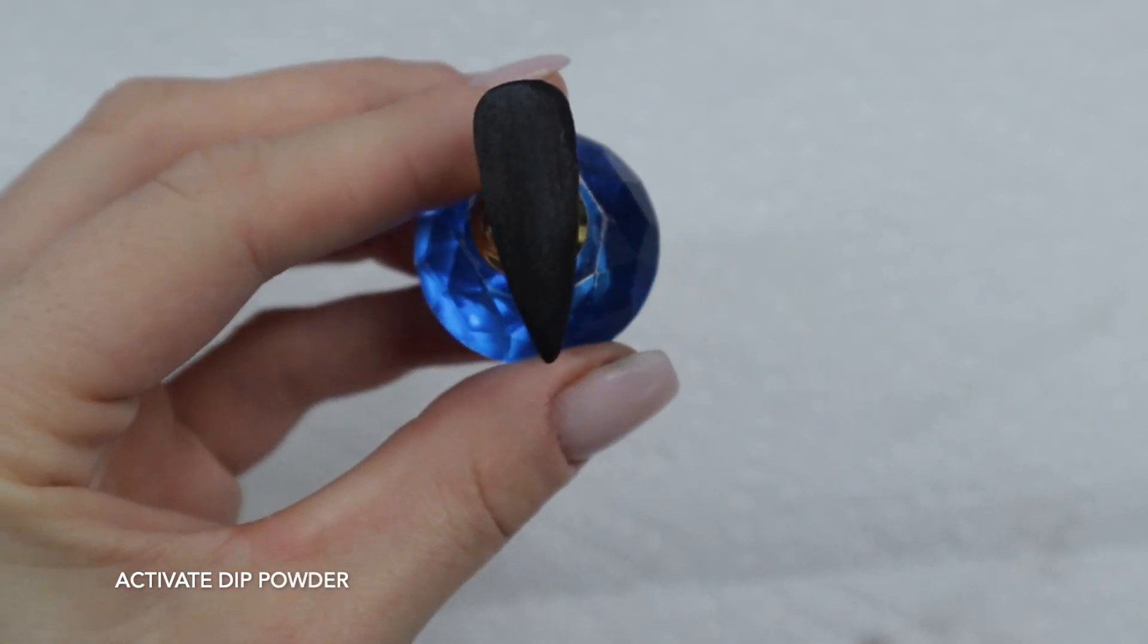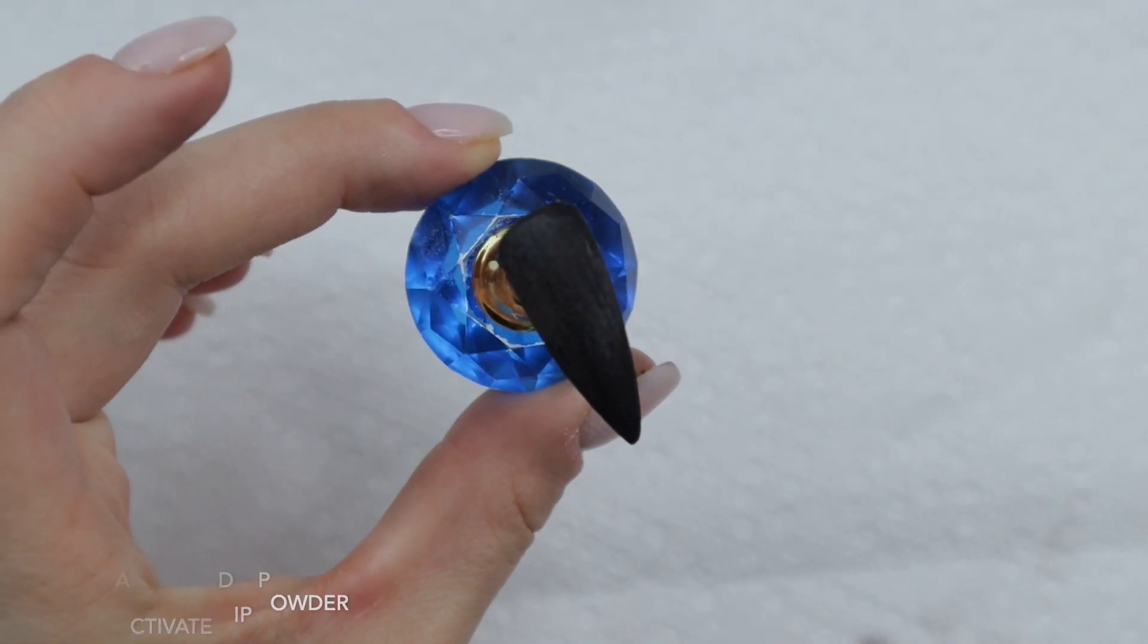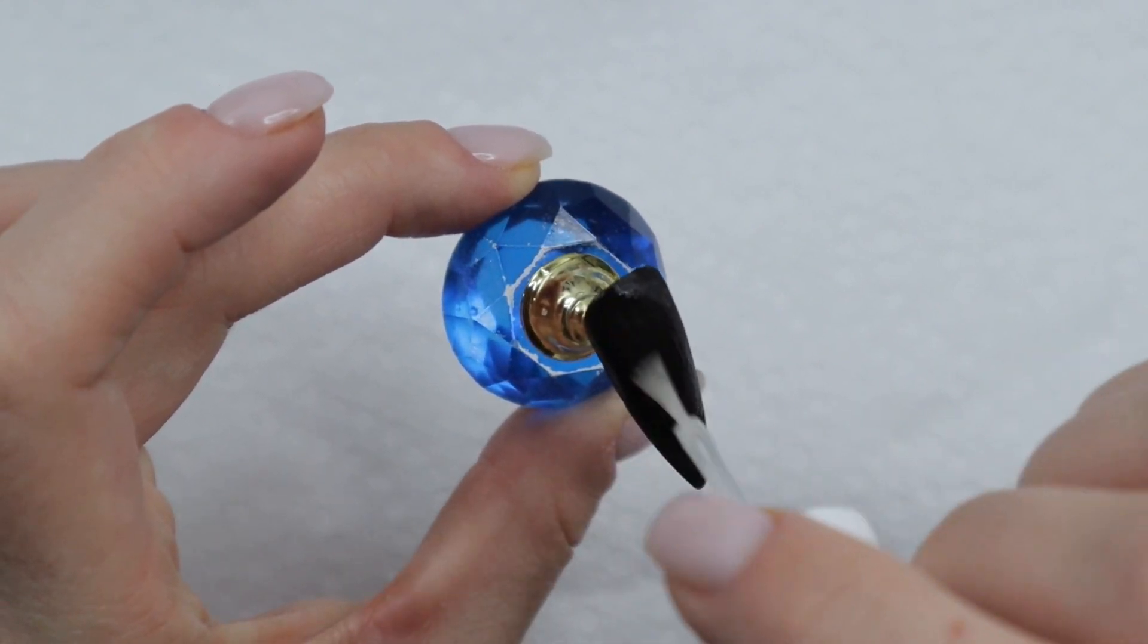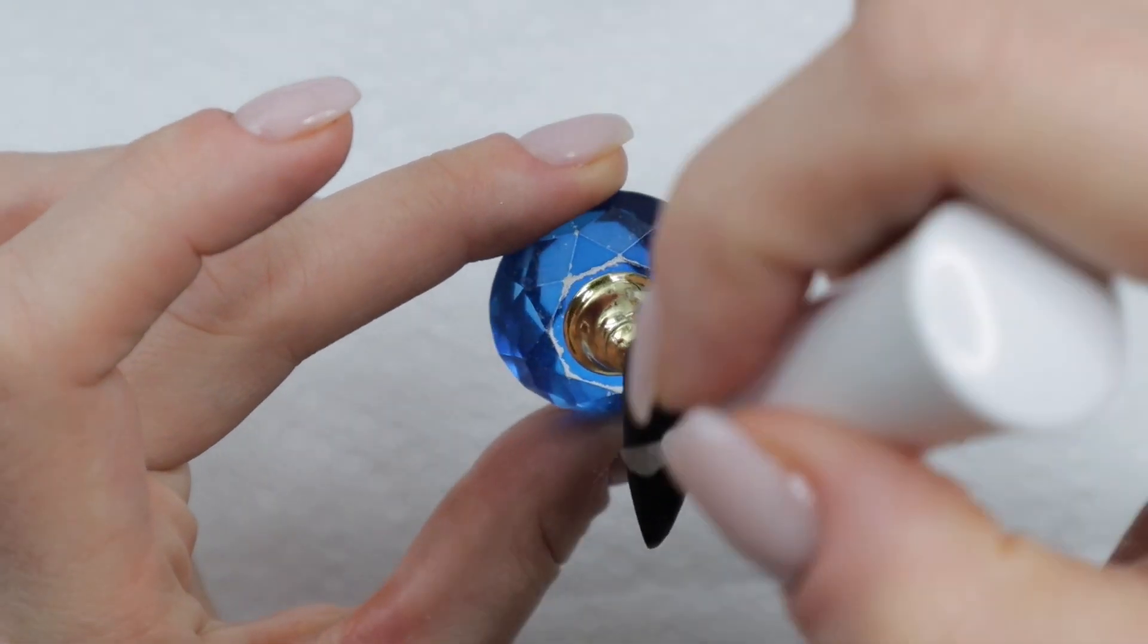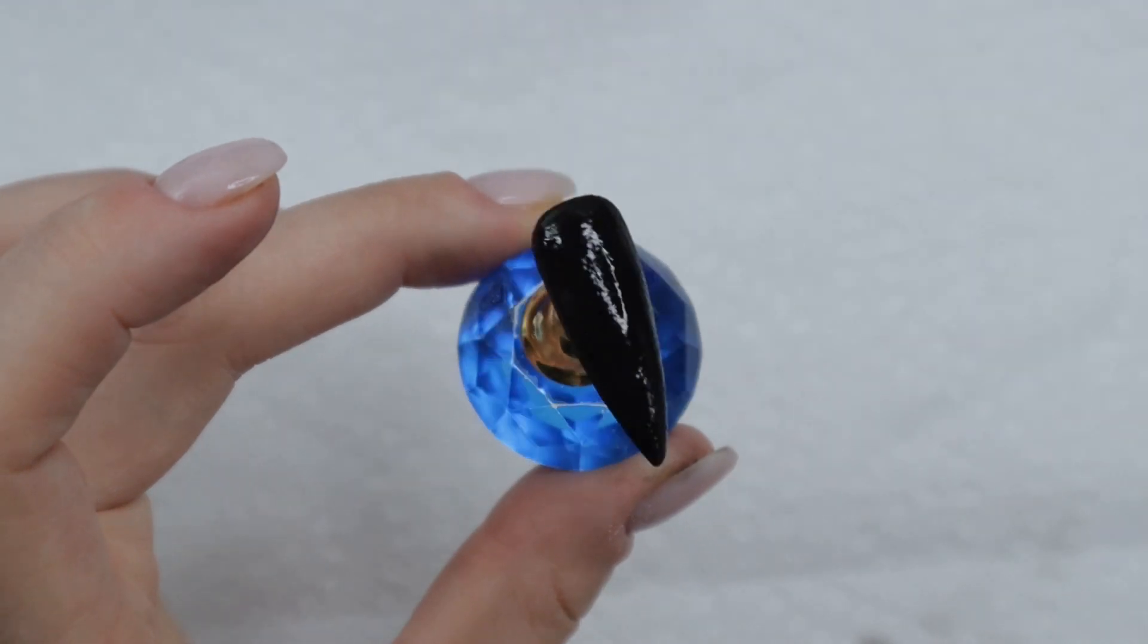As per usual you'll want to activate your nail for a second time. This is why this matte dip top coat is considered a dip powder matte top coat because it relies on the activator to help it dry.